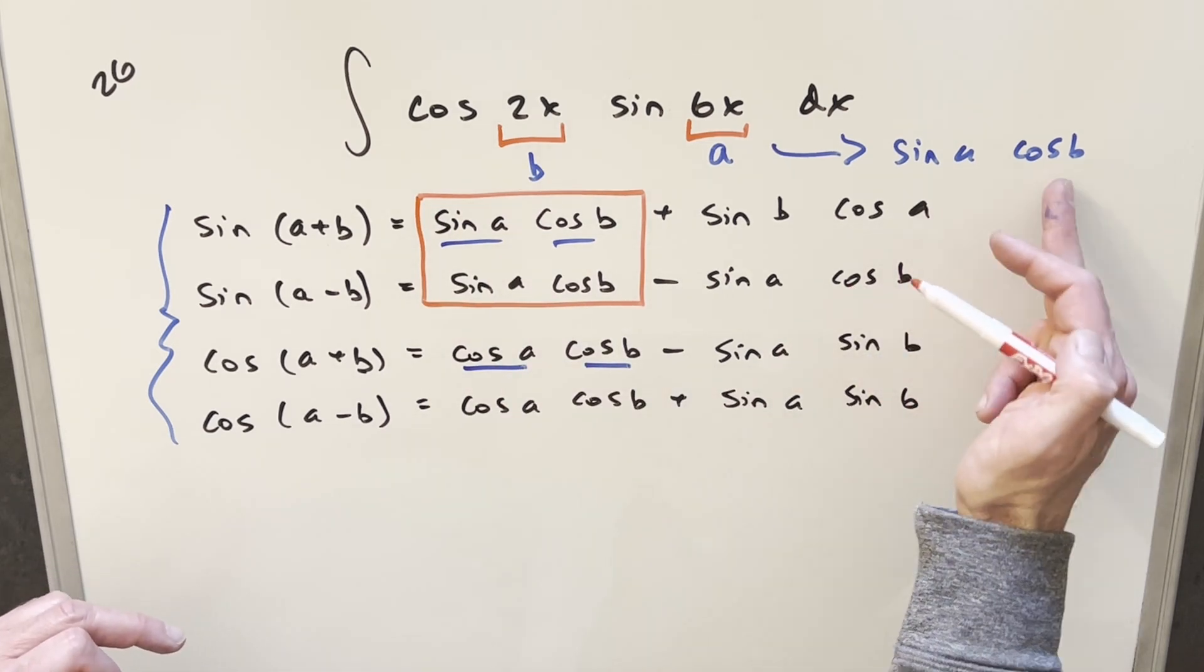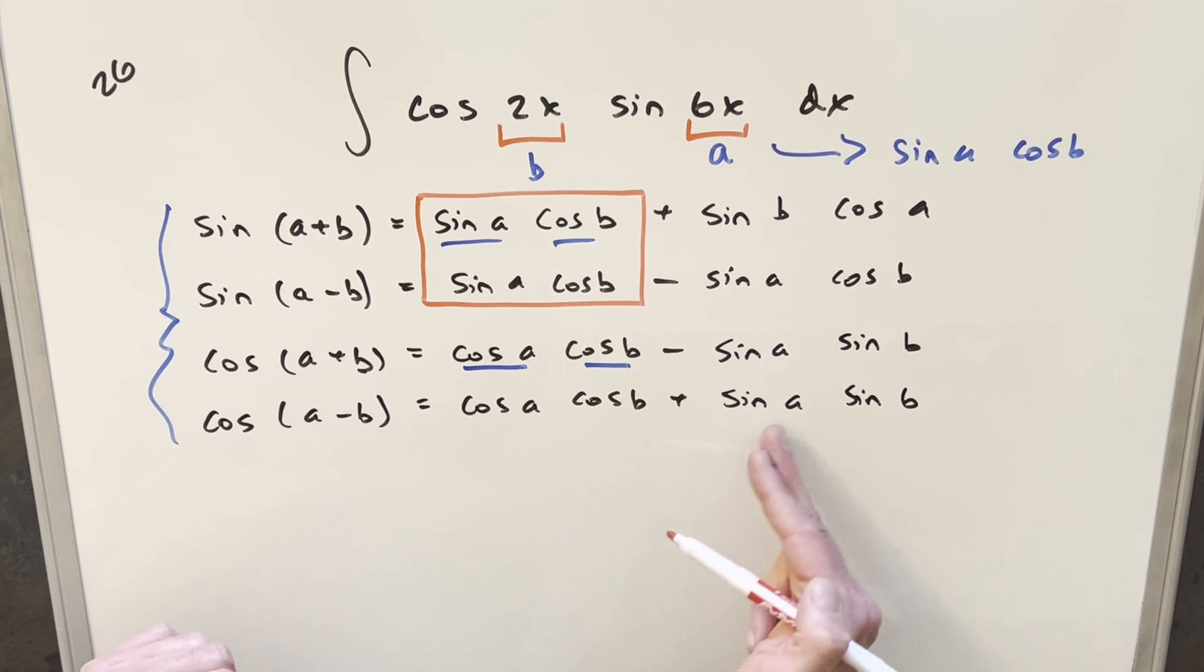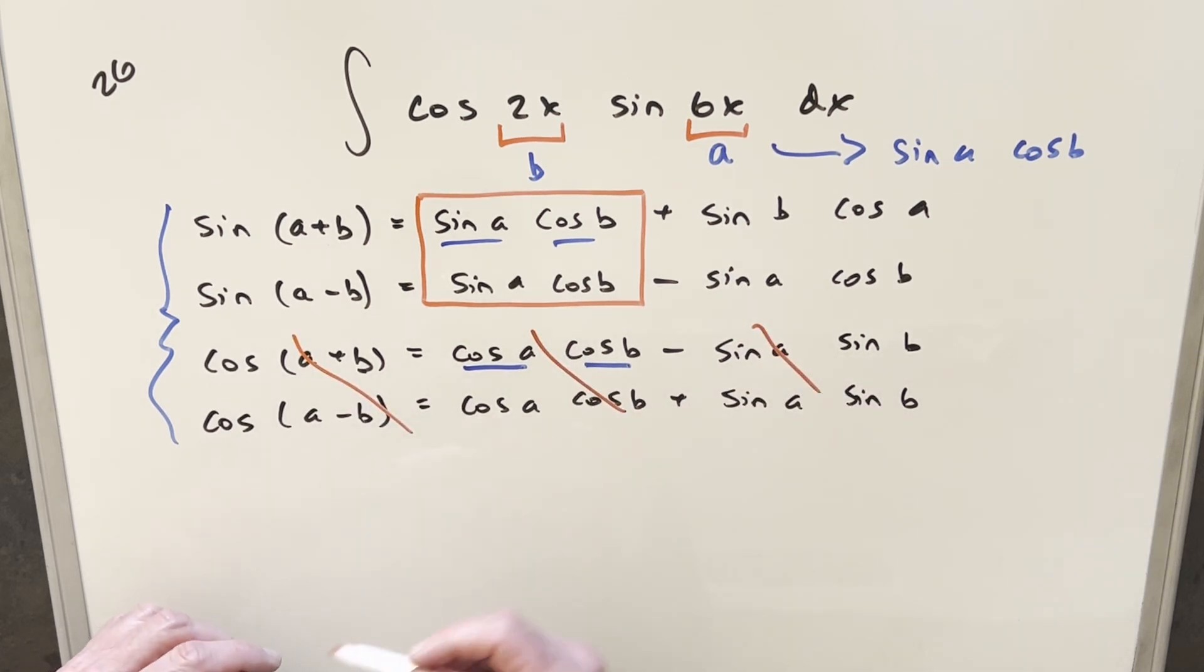And coming down here, we have those values, we have it right here. But notice sine a cos b doesn't show up at all in these formulas for cosine, right? Because we have cosine a, cosine b, sine a, sine b. So these formulas here, those are not going to help us in this case.